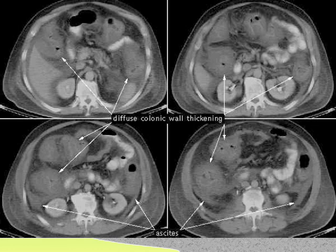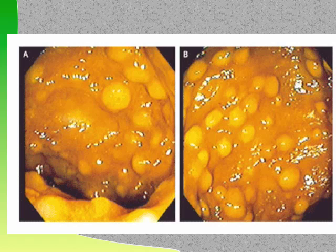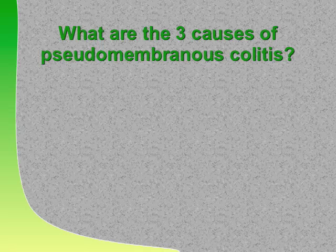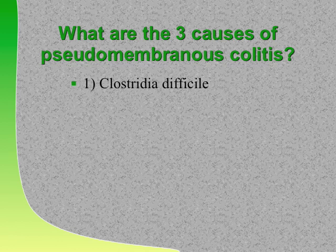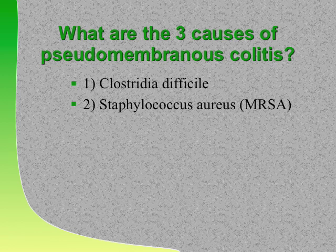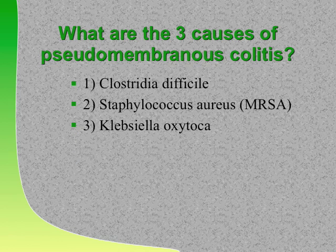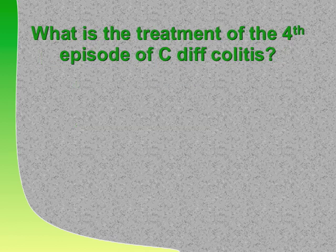A patient with thickened bowel wall and pseudomembranes: most common cause of pseudomembranous colitis is C. diff. Second most common cause—if you keep getting negative C. diff tests—is Staph aureus, including MRSA, treated with oral vancomycin. Third cause: Klebsiella oxytoca. For a fourth episode of recurrent C. diff colitis: give vancomycin 125 mg plus rifaximin.